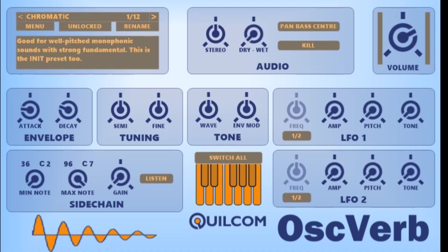The OSVerb is not really a reverb, although there are some similarities in the way it works. It doesn't make use of lots of delays and comb filters, nor does it use any convolution method. Instead, it uses 61 synthesizers and each one of these is tuned to a pitch and responds to the amplitude of the incoming pitch and waveform harmonic components.